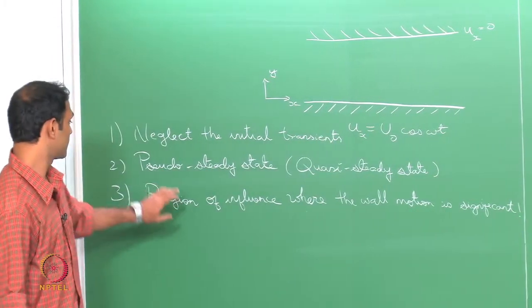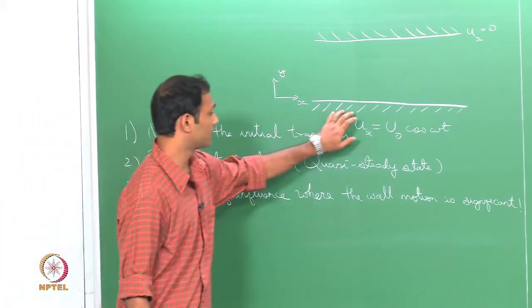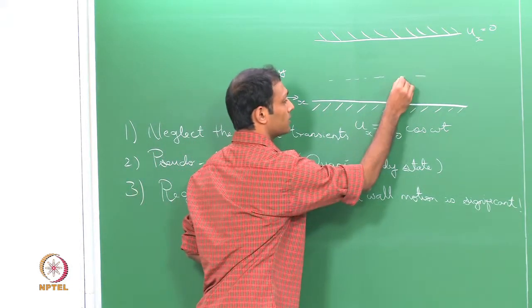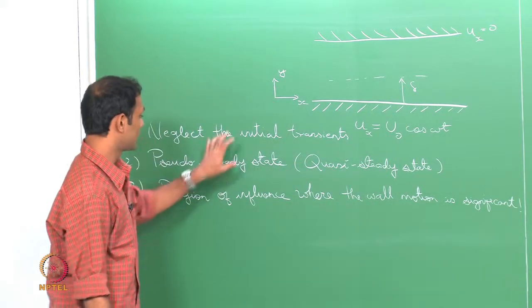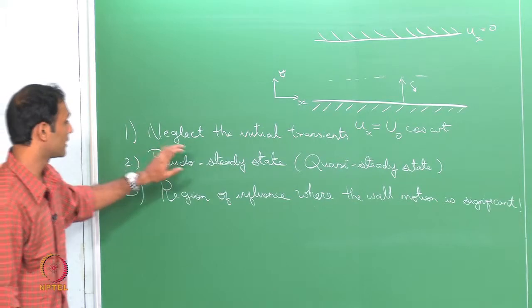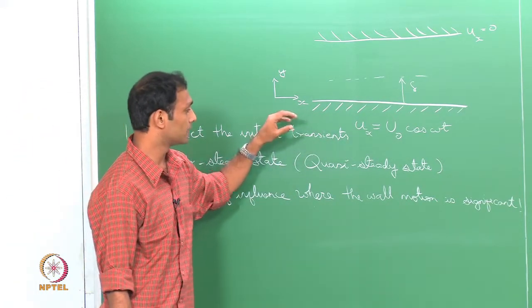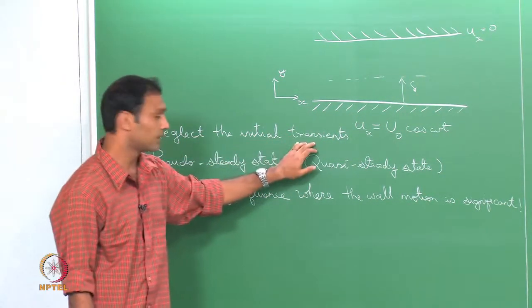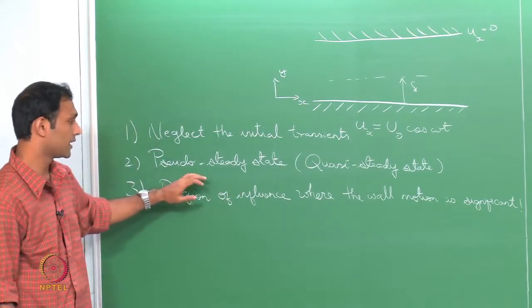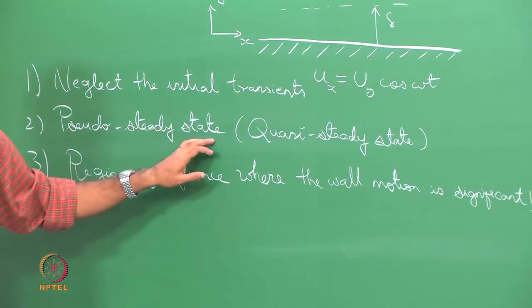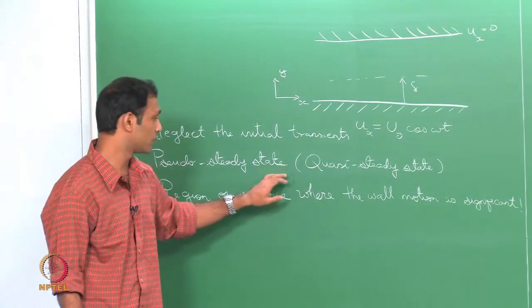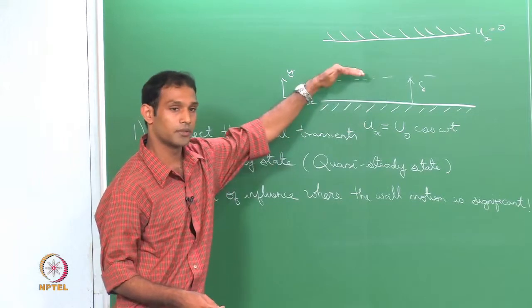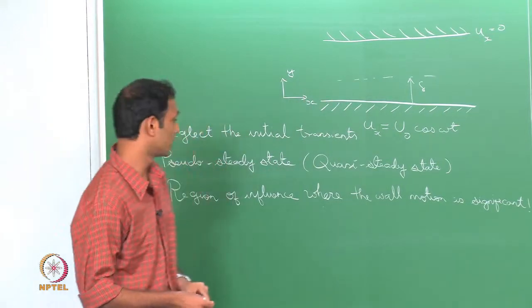The third thing is we will find out the region of influence where the wall motion is significant. The motion of the wall is going to affect the flow only till a particular region of influence called delta. These are the 3 cases: first, conditions to neglect initial transients; second, quasi steady state approximation; and third, finding the region of influence delta through scaling.